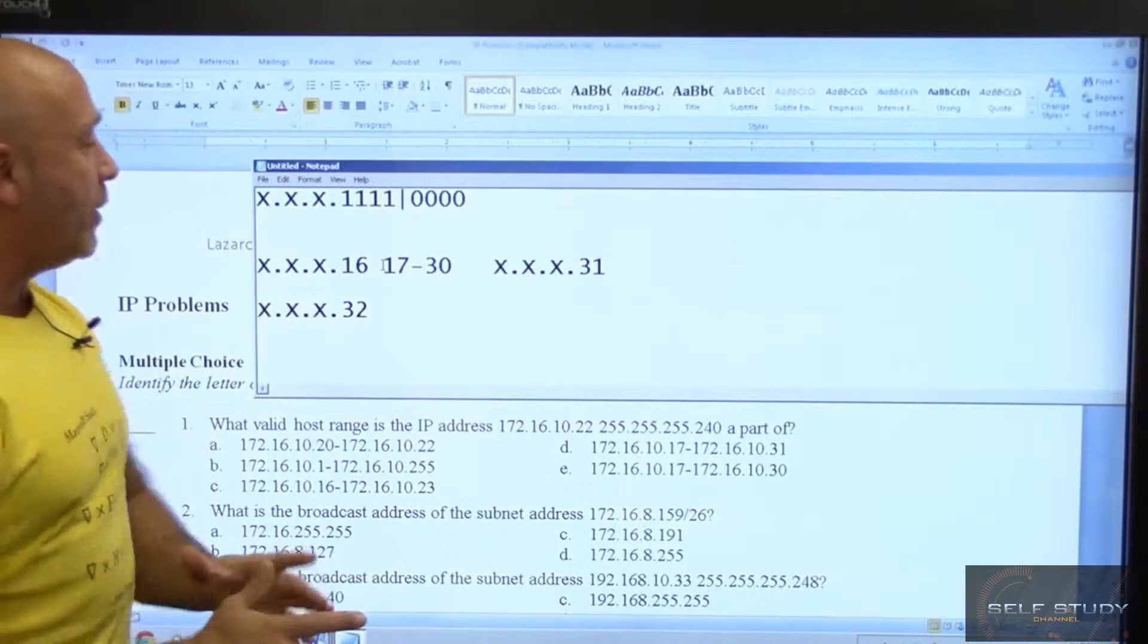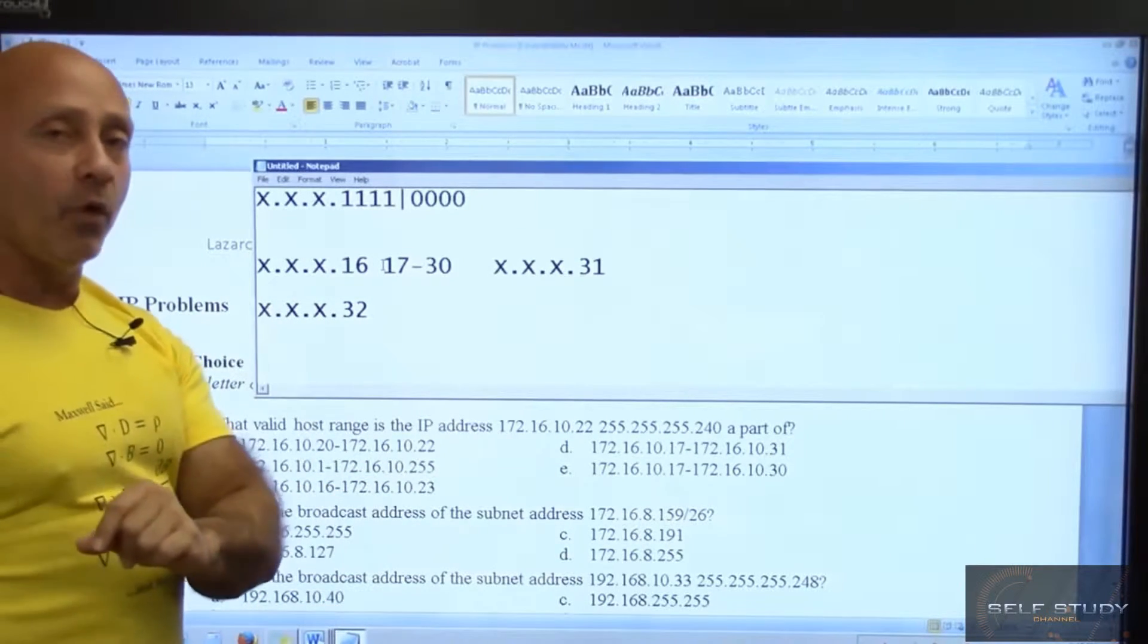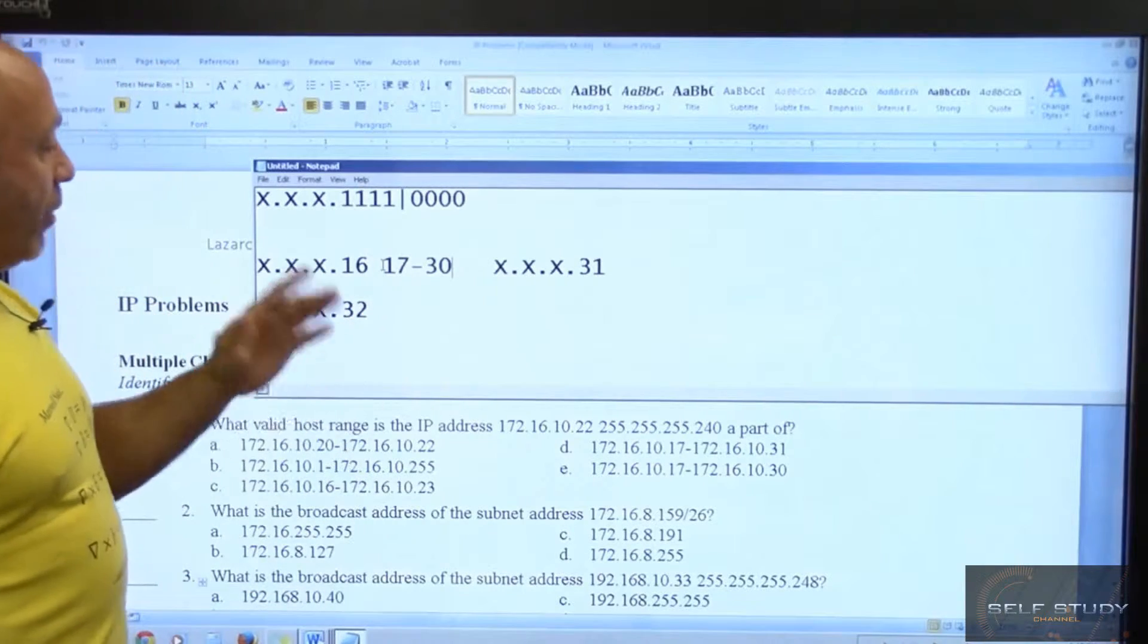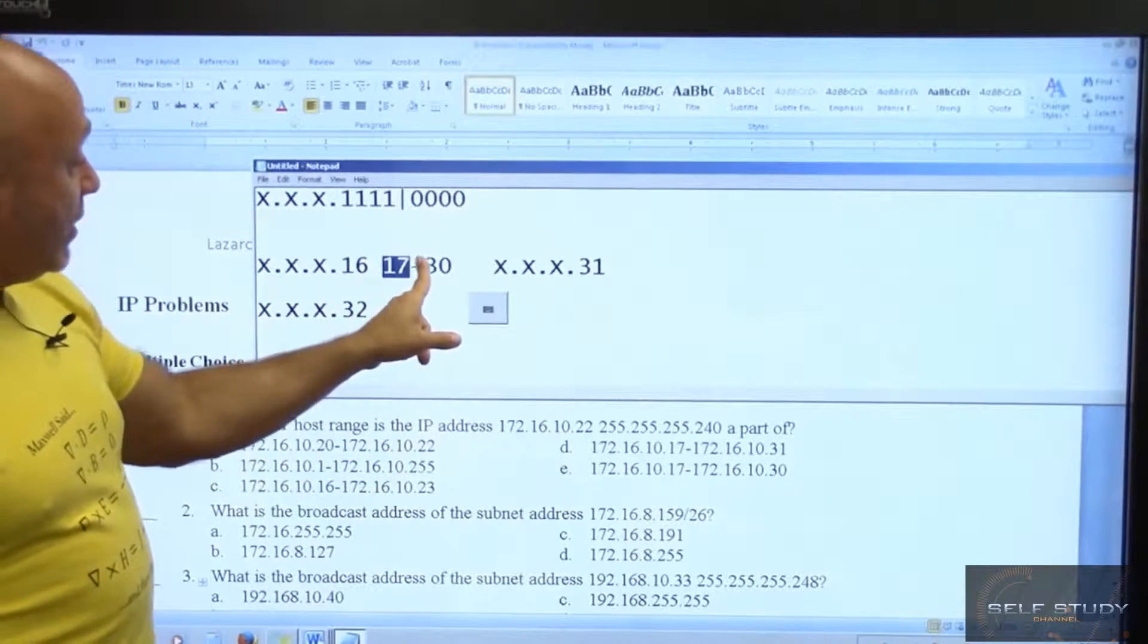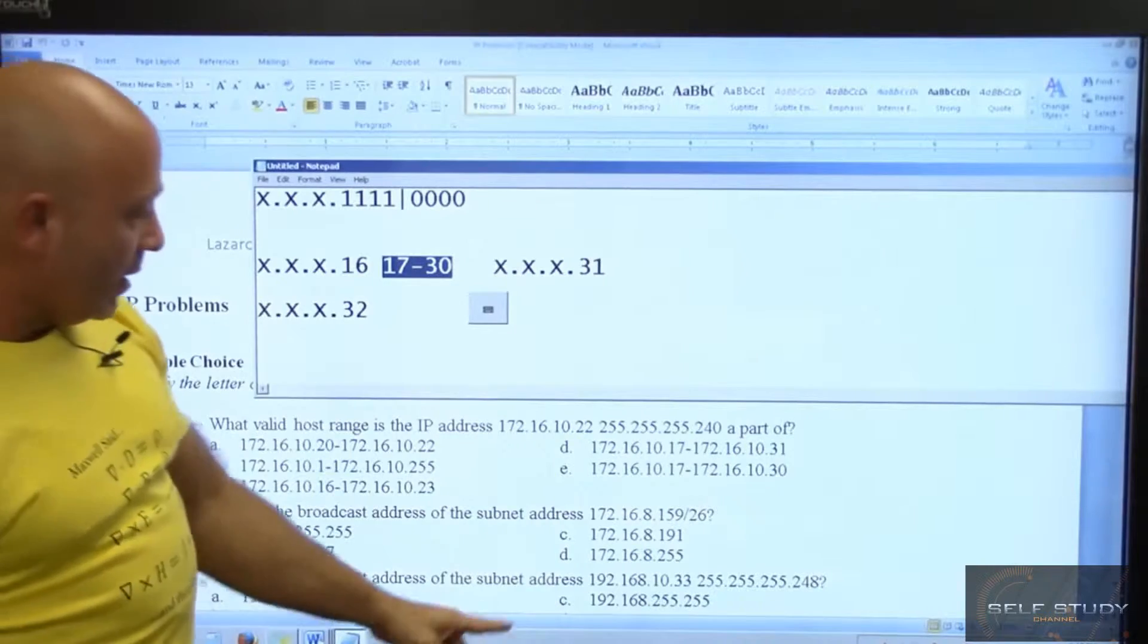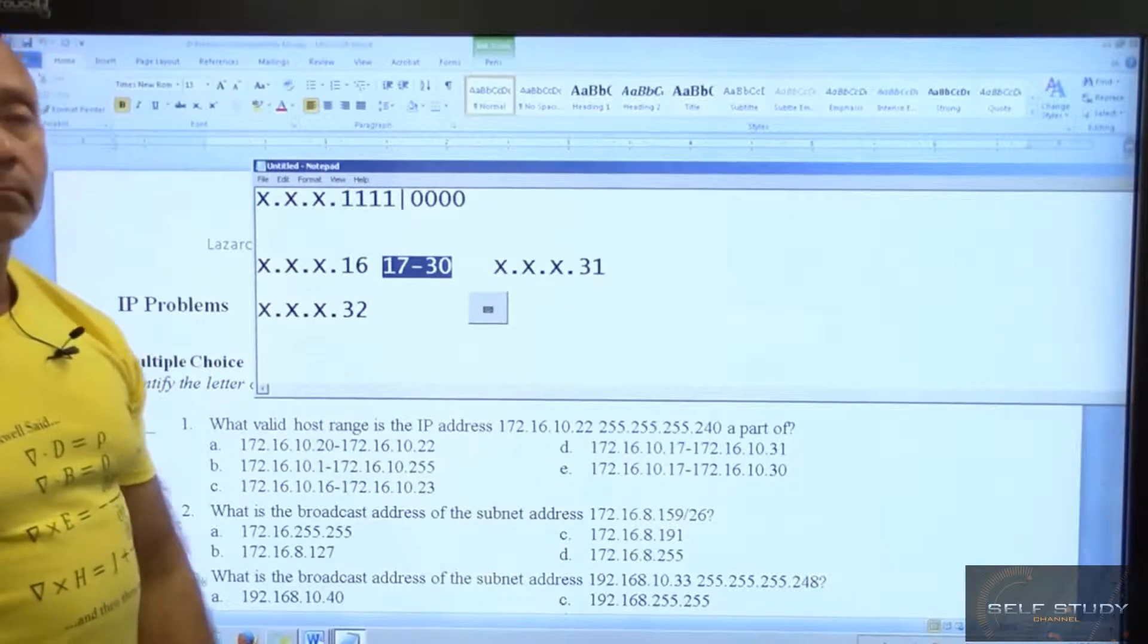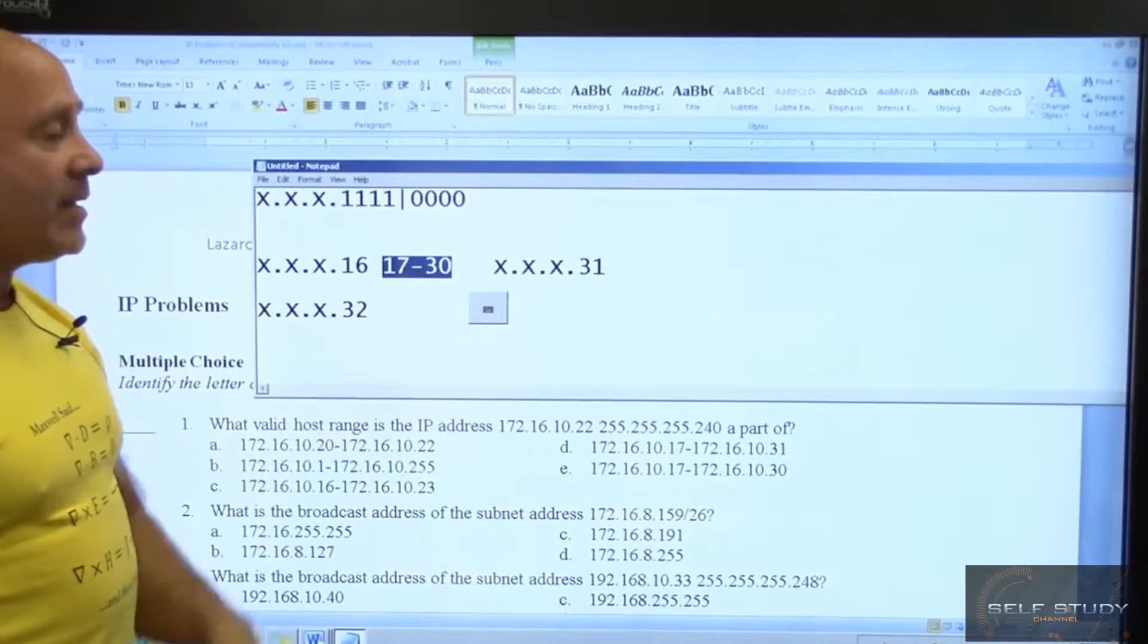Even easier, since I incremented twice, what's one less than 32? 31. And it always works out that way. So there's many ways of doing it to make it quick, make it easy for you so you can do less work and get your answers that you need. But anyway, for this first answer, the range is 17 through 30, so the answer would be E.